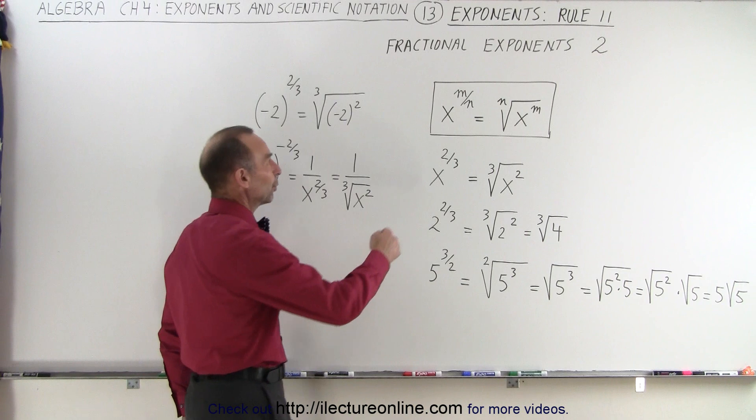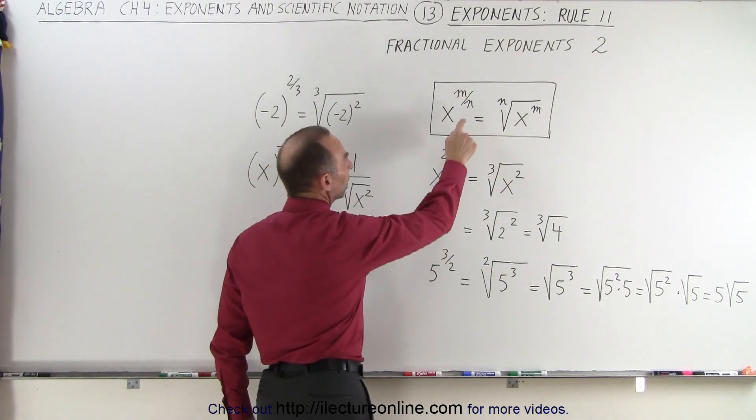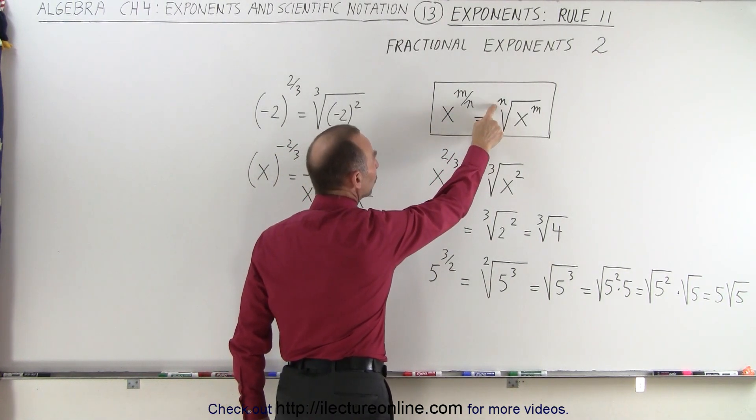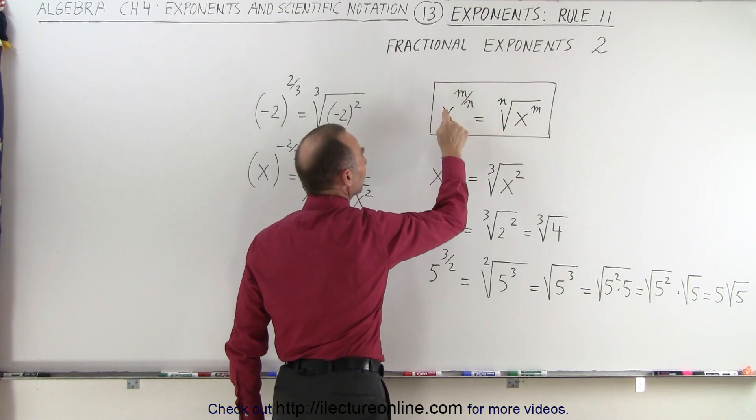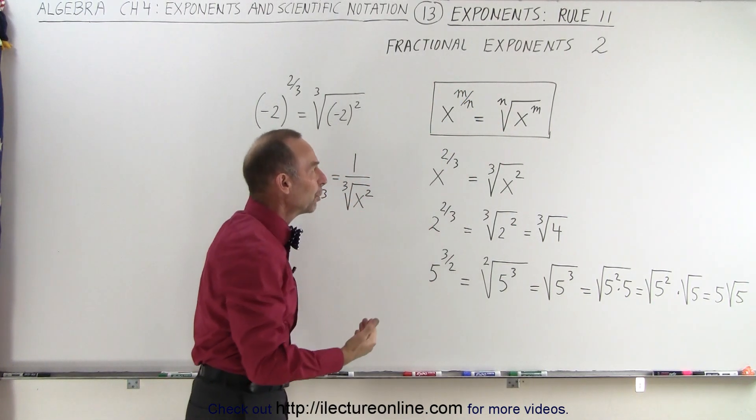For example, x raised to the m over n power. The number on the denominator is still the nth root, but the number in the numerator is what x is raised to as an exponent.